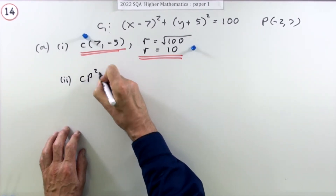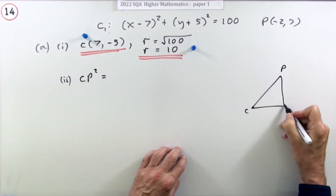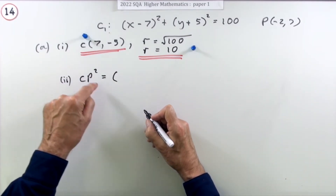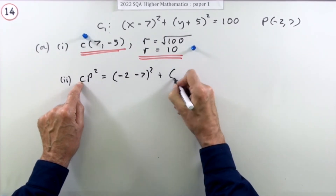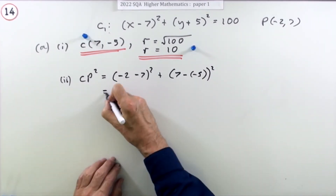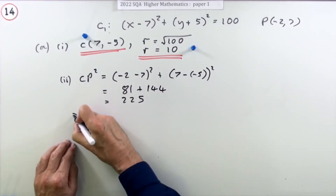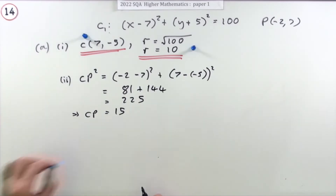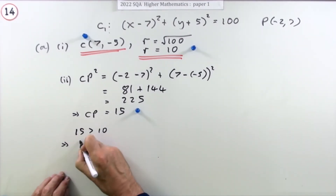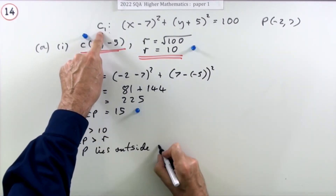To find the distance from C to P, you use Pythagoras — the difference in the x's and the difference in the y's. So: (-2 - 7)² + (7 - (-5))² = (-9)² + (12)² = 81 + 144 = 225, which means CP is 15. Now, 15 is more than 10, which means CP is greater than the radius, which means P lies outside C1.